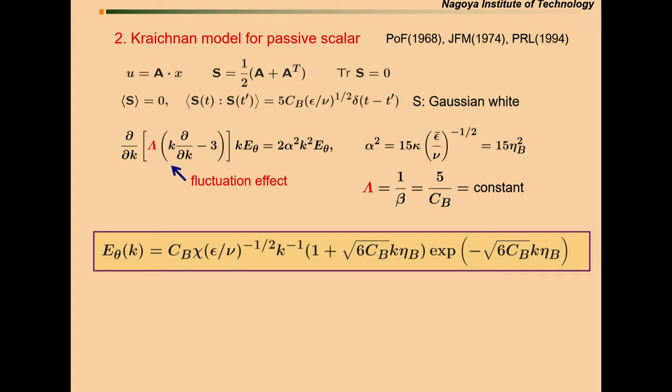Now, Kraichnan model. He assumed that S is delta correlated in time. He obtained the equation for E_theta as this. The point is that this time, second order derivatives with respect to wave number. This is an expression which explains the fluctuation effect of straining field. One important thing is that lambda. Lambda is a scalar relaxation time, which describes the rate of transfer of scalar through the inertial viscous convective range. In Kraichnan's theory, lambda is constant. The outcome is C_B, k to the minus 1, and exponential decay.